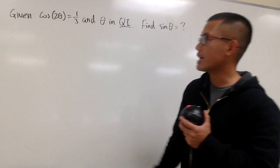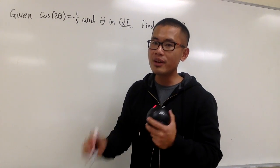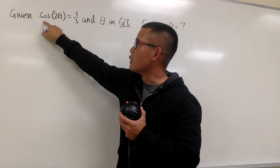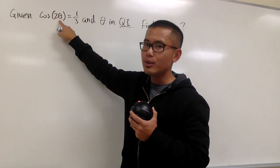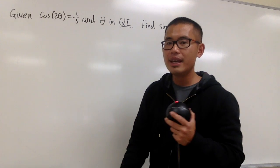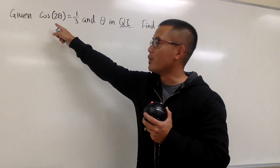And what we can do in this case is, do not take the inverse cosine of both sides, but rather, use an identity for cosine of 2 theta. Especially, you know, this is a double angle situation for cosine, right? And we know there are three versions for the double angle formula for cosine.